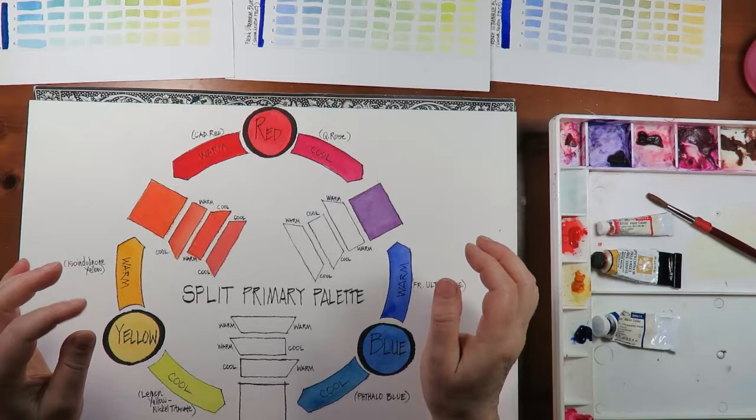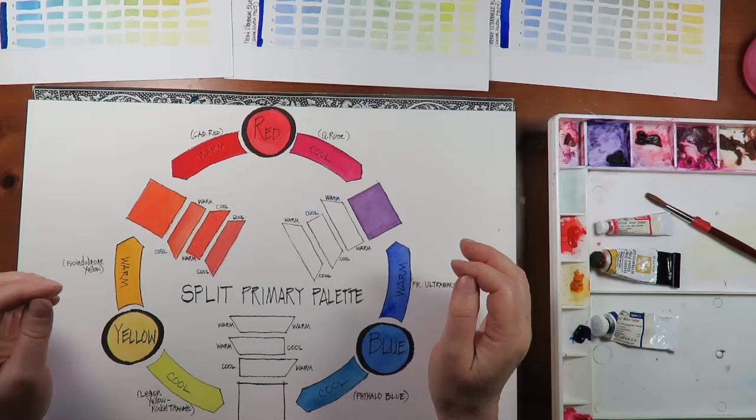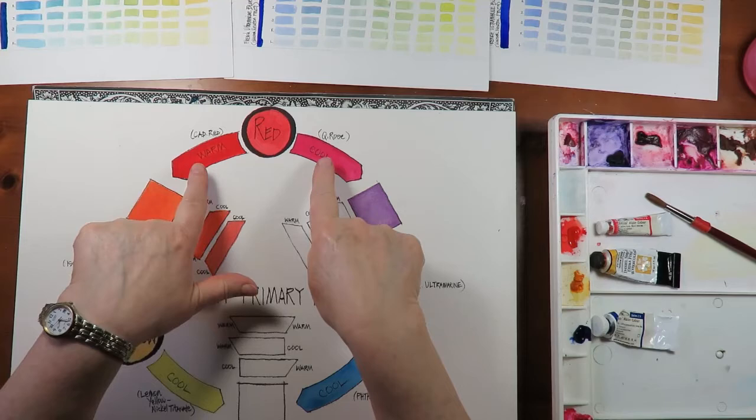Now, what defines a primary color? Have you been told that it's because you can't put other colors together to get it? Well, guess what? We put two colors together to get each of these primary colors.